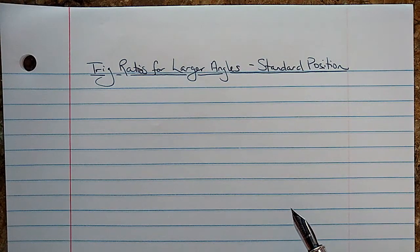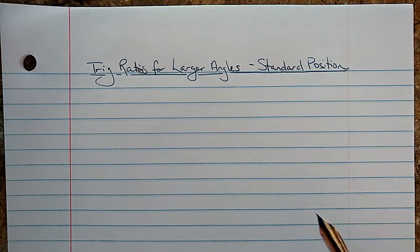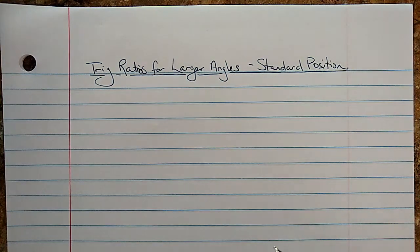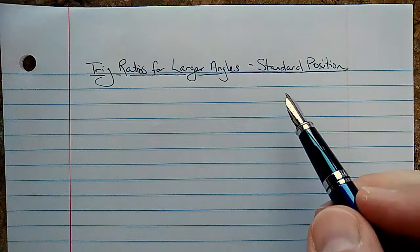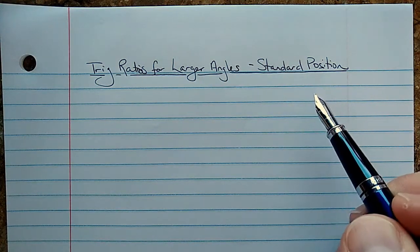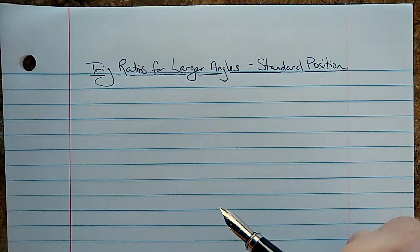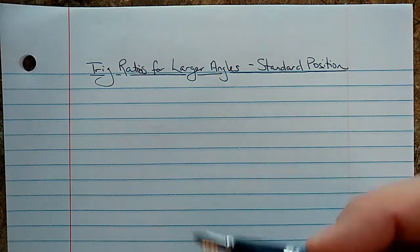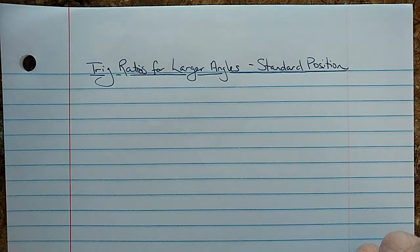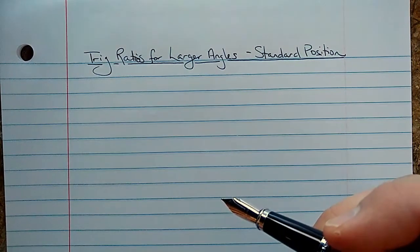And so when we want to talk about the trig ratios for larger angles, we need a little bit of notation and we have to have a common place to work from. So we're going to learn about standard position, which is a way for us to draw angles on a grid, on a Cartesian xy grid, so that we're all referring to them in the same way.